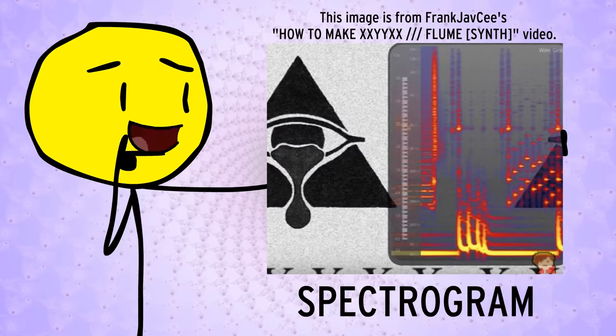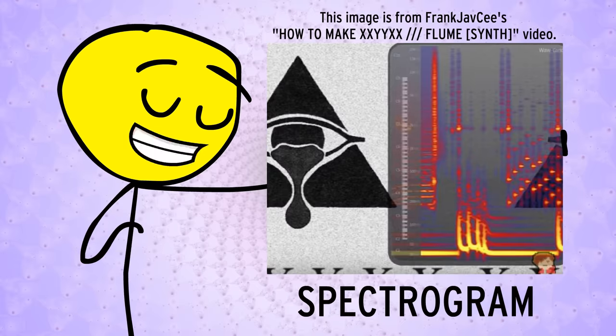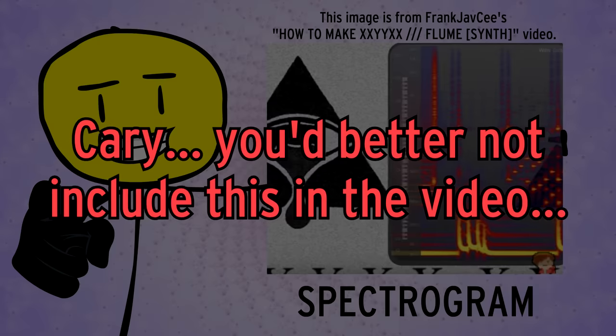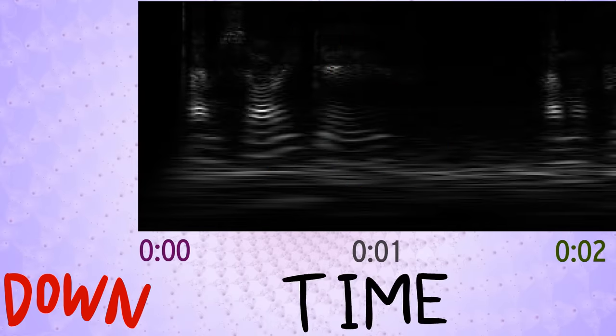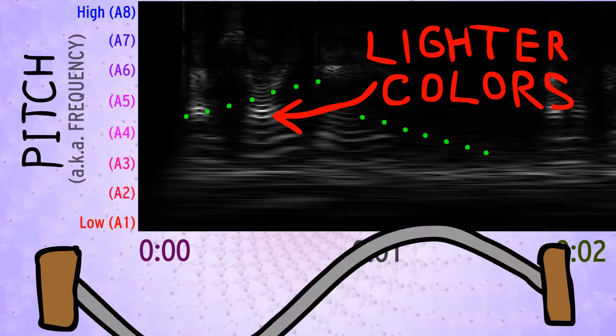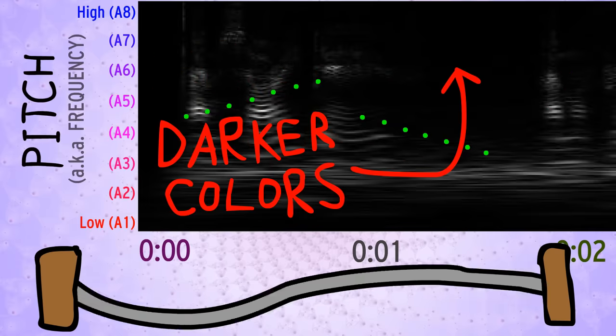Enter the spectrogram, one of the most simple, intuitive representations of sound known to humankind and now you. I just realized that implies you aren't a human. But I mean, that's not surprising. Just look at you. It's a two-dimensional heat map of sorts, where right and left mean forward and backward in time, and up and down mean higher and lower in pitch. Lighter colors mean stronger vibrations at that frequency at that time, and darker colors mean weaker vibrations.